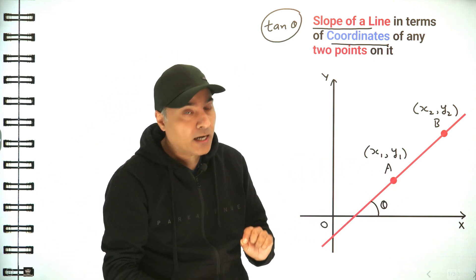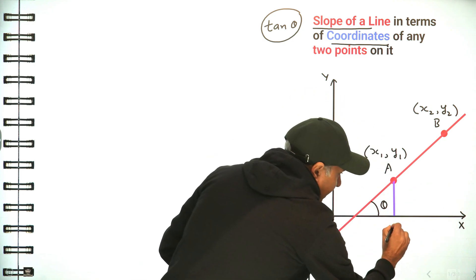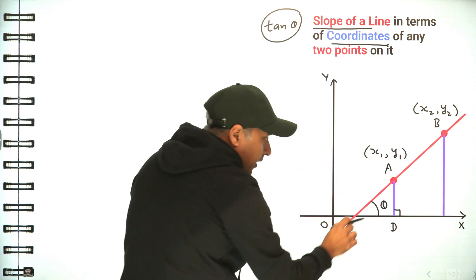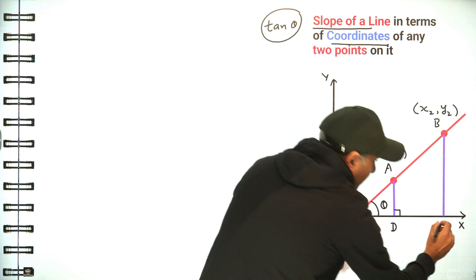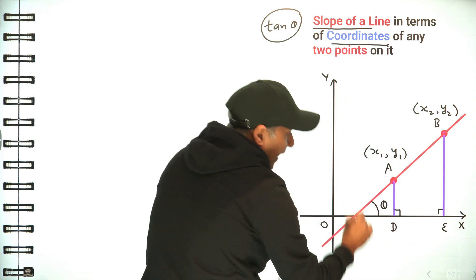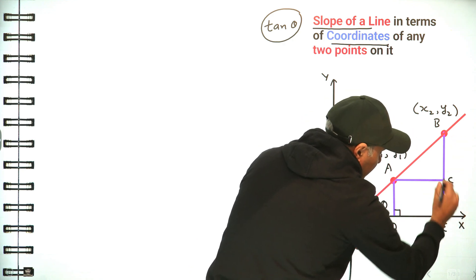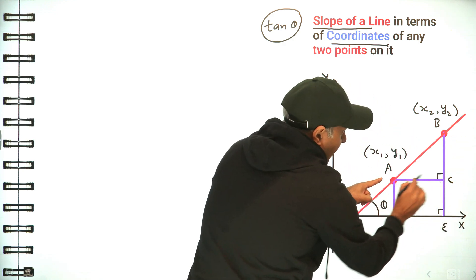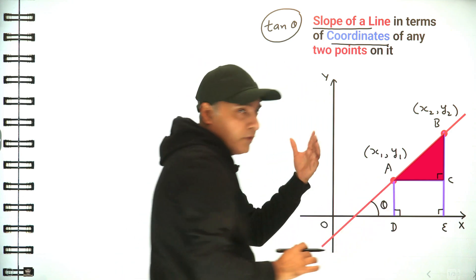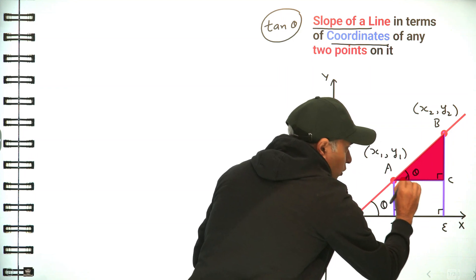To do that, first let's draw a perpendicular AD on the x-axis, another perpendicular BE on the x-axis, and then one more perpendicular AC on the line. So ACB is a right angle triangle, and we will use this triangle.